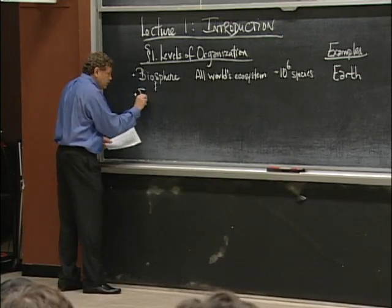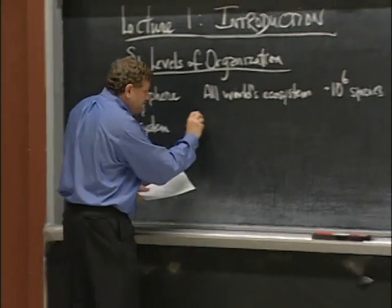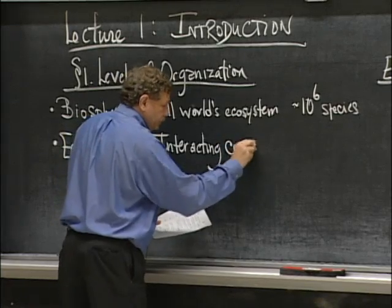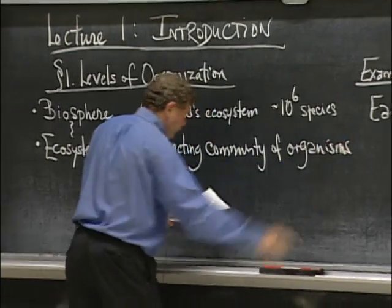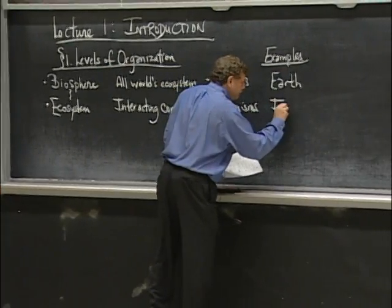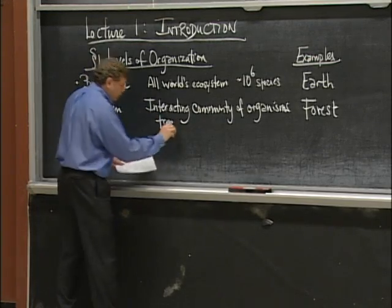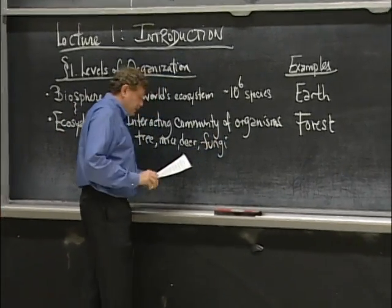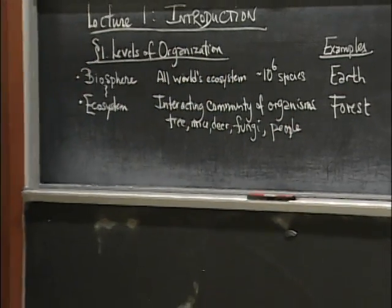We will have virtually nothing to say about that level of organization other than that we're fond of it. Next, you could study an ecosystem. Now, what do we mean by ecosystem? That's some interacting community of organisms, like a forest, let's say. You've got trees, and you've got mice and deer, and you've got fungi growing down there on the bottom.